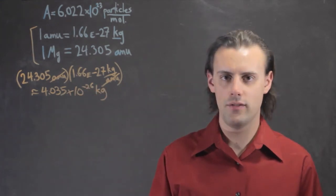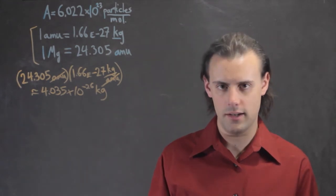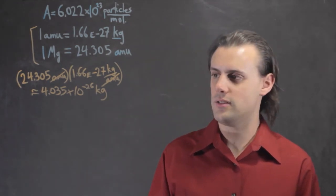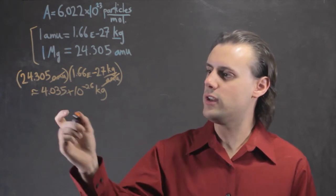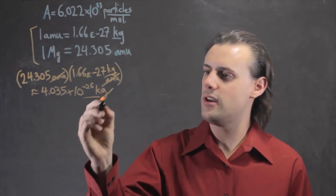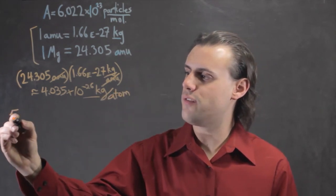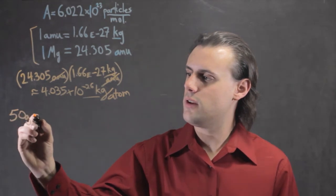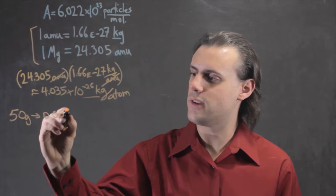So, given 50 grams of magnesium, we can ask how many magnesium atoms exist in that sample. To calculate that, if we know this is the mass per atom, then we simply start with 50 grams, which equals 0.05 kilograms.